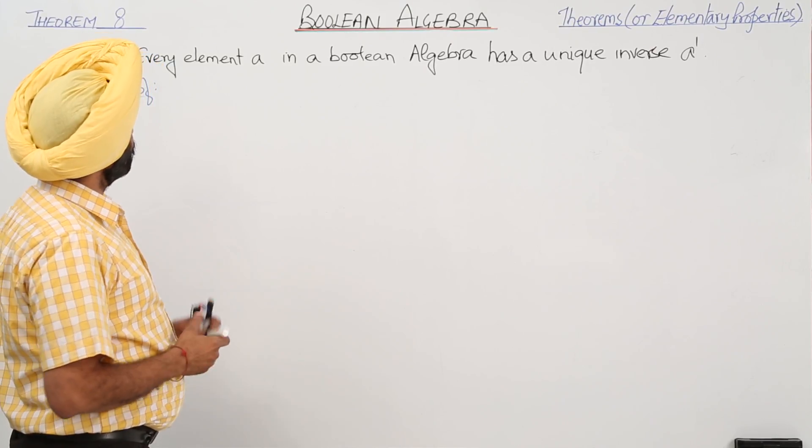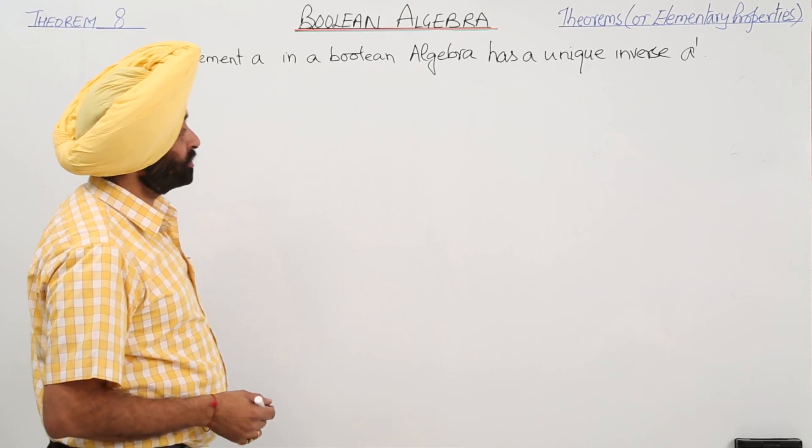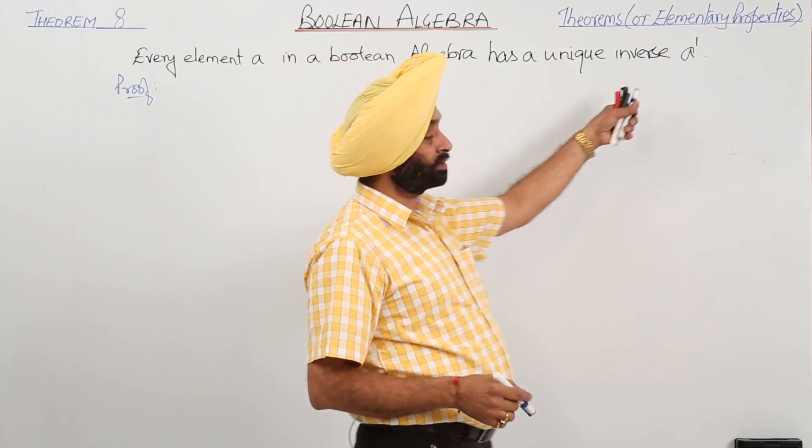Now, theorem 8: every element A in a Boolean algebra has a unique inverse, that is A inverse.